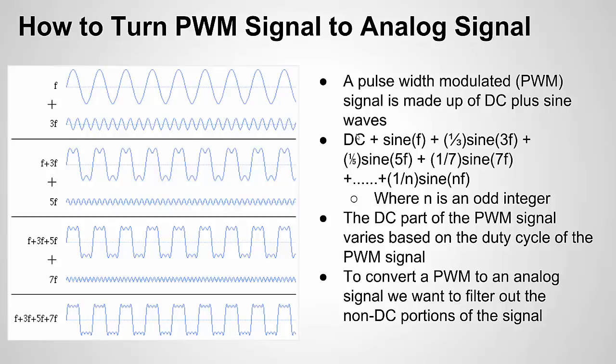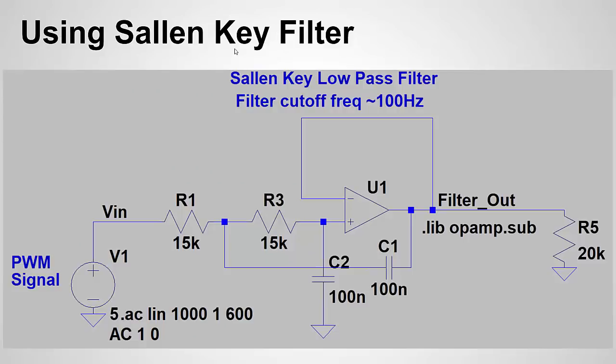And the DC component varies based on the pulse width modulation. The higher the duty cycle of the on time, the higher the DC is going to be and then lower vice versa. So that's what we're doing. We're trying to get this DC value to create an analog signal from our pulse width modulated signal.